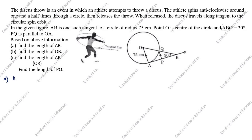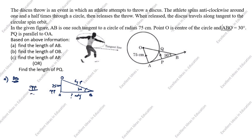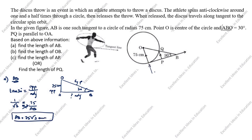First, we will find the length of AB. We draw the triangle with angle 30 degrees at B. The given side OA is 75 centimeters, which is the opposite side, and AB is the adjacent side we need to find. Using tan 30 degrees — opposite by adjacent — tan 30 = 1/√3 = 75/AB. Cross-multiplying, AB = 75√3 centimeters.